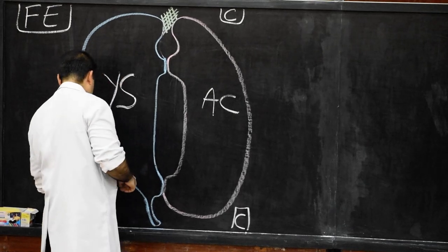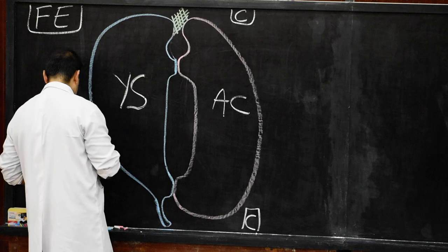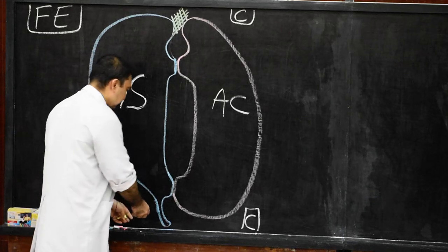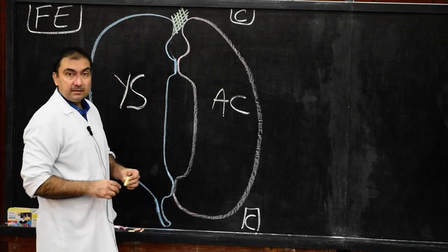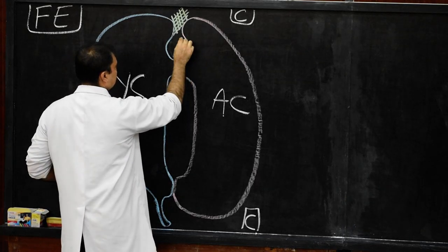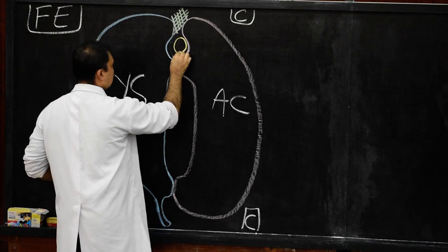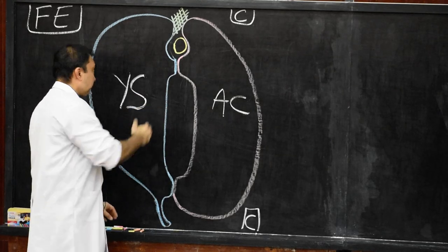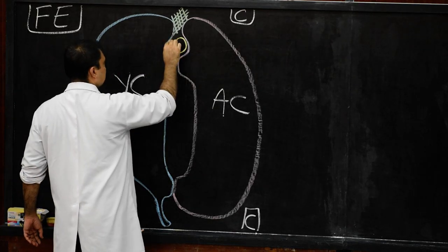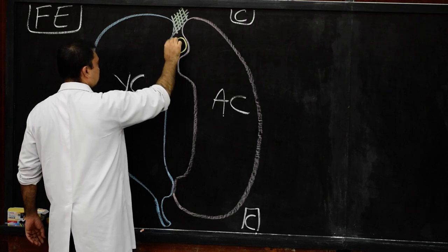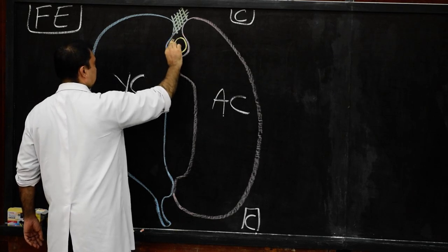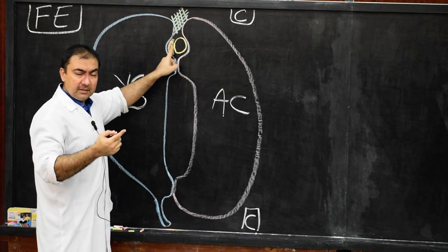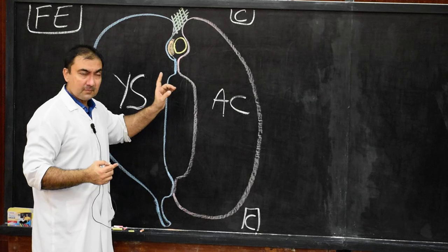The next structure is the pericardial cavity. Draw the pericardial cavity and the cardiogenic plate such that the pericardial cavity is lying dorsal — this is the dorsal side, amniotic cavity. On the ventral side, that means on the floor of the pericardial cavity, draw the cardiogenic plate. So, pericardial cavity lies in the dorsal part and the cardiogenic plate lies in the floor portion.